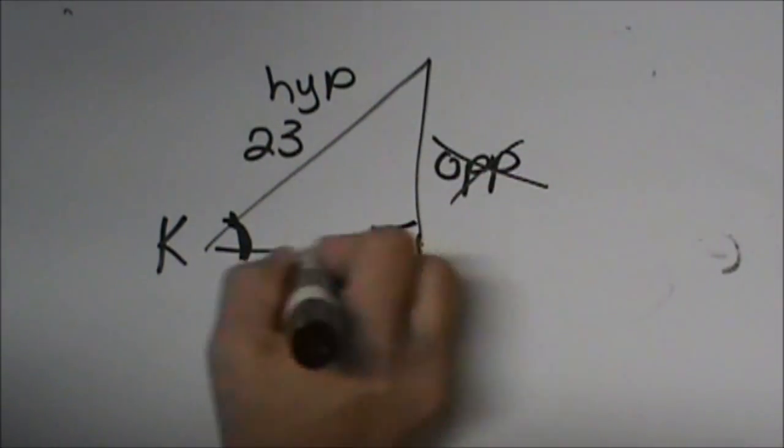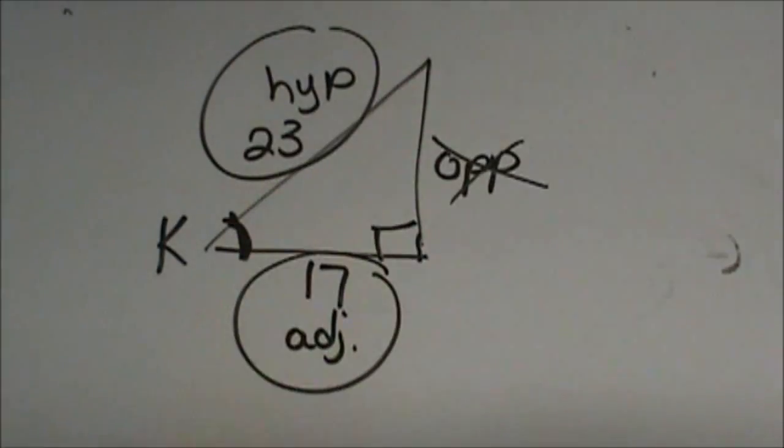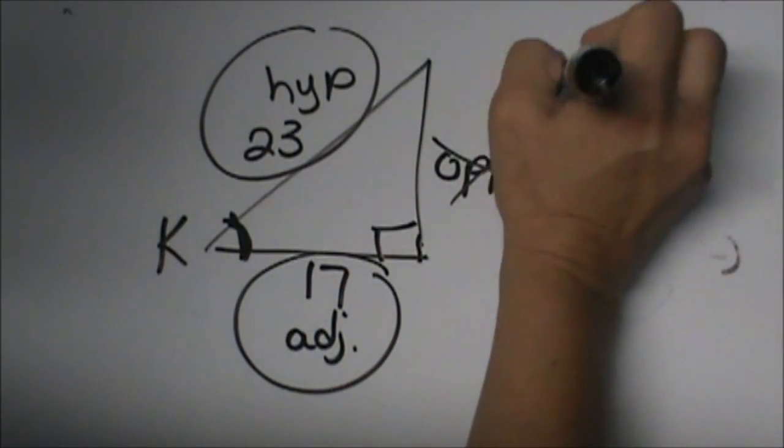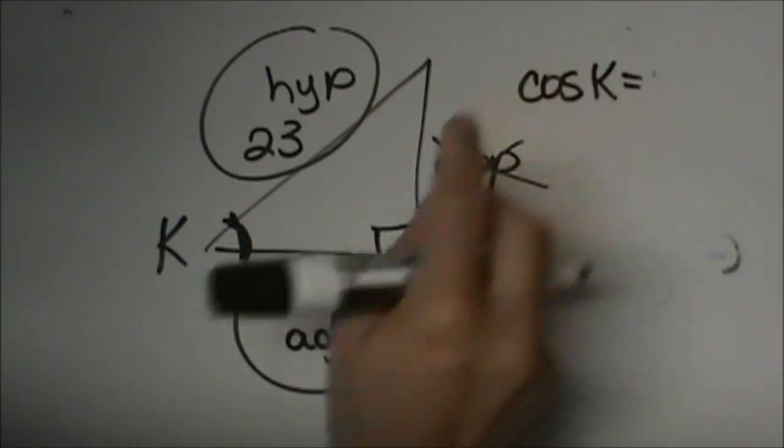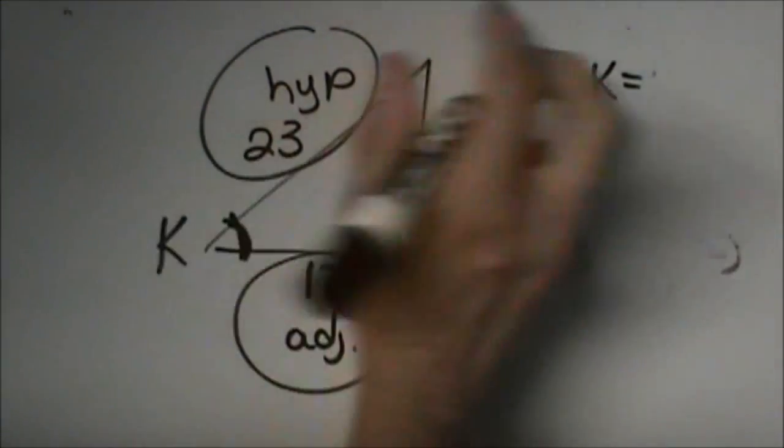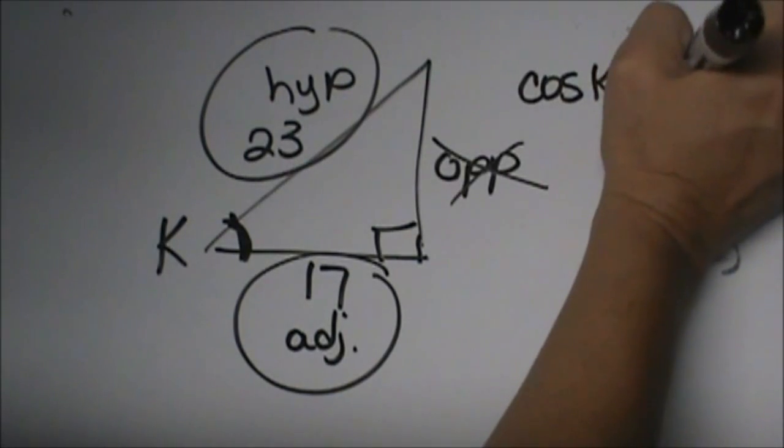We are not using opposite; we are using adjacent and hypotenuse, so which one is this? This is cosine. So we are taking the cosine of angle K, and that is equal to adjacent over hypotenuse, so 17 over 23.